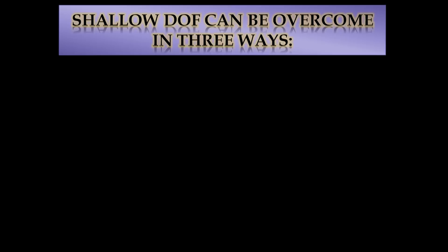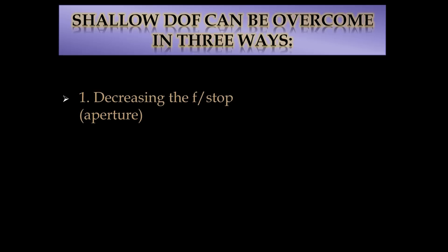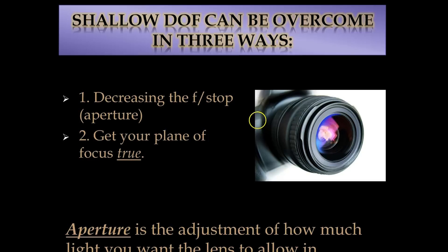So let's deal with each of these in turn and start with shallow depth of field. Shallow depth of field can be overcome in basically three different ways. The first is by decreasing the f-stop or aperture. The aperture controls how much light the lens allows in. Every time you hit the shutter, your aperture opens and closes — the shutter speed controls how fast it opens, and the aperture or f-stop controls how wide it opens.